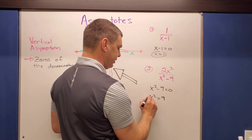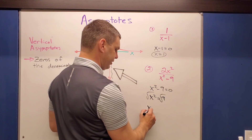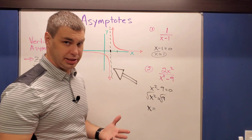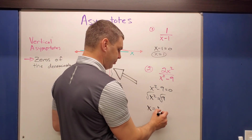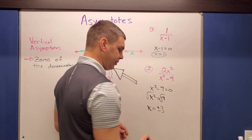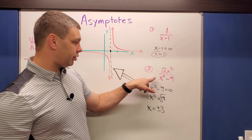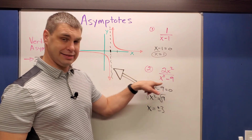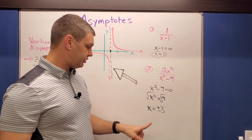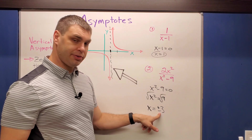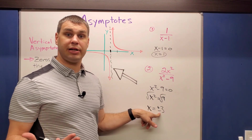Adding nine to both sides gives x squared equals nine. Taking the square root of both sides — and of course we get a plus or minus — gives x equals plus or minus three. So 2x² over x² minus nine has two vertical asymptotes at positive three and negative three.